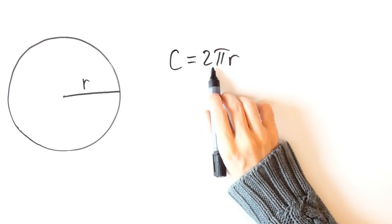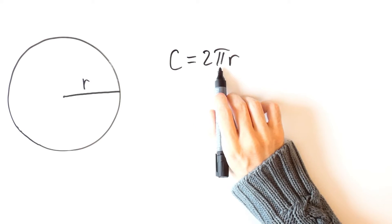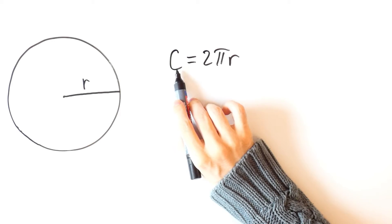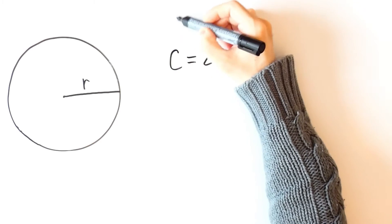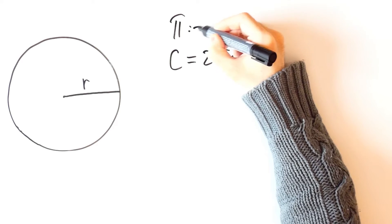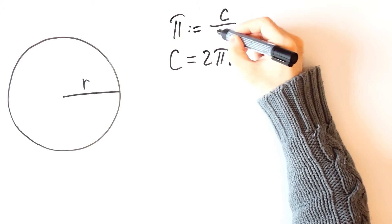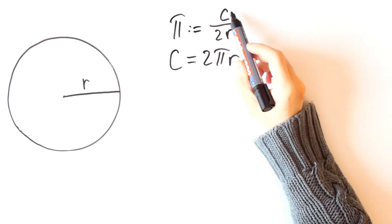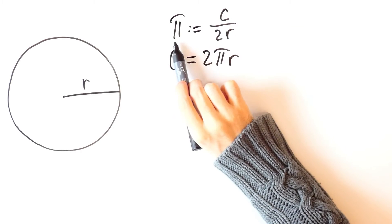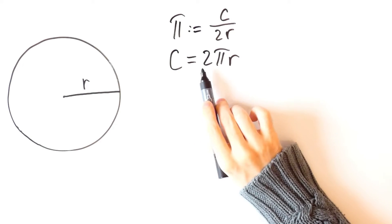In fact, pi is by definition equal to the ratio of the circumference to the diameter of a circle, so pi is by definition equal to c over 2r, which means that the circumference is equal to pi times 2r or 2 pi r.